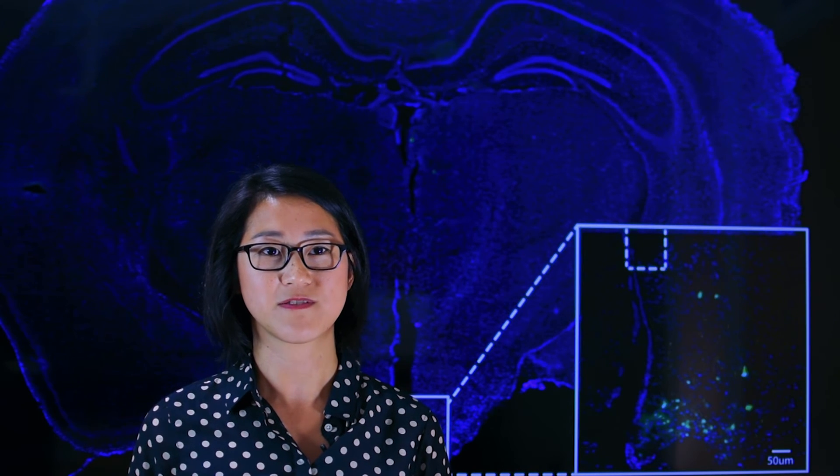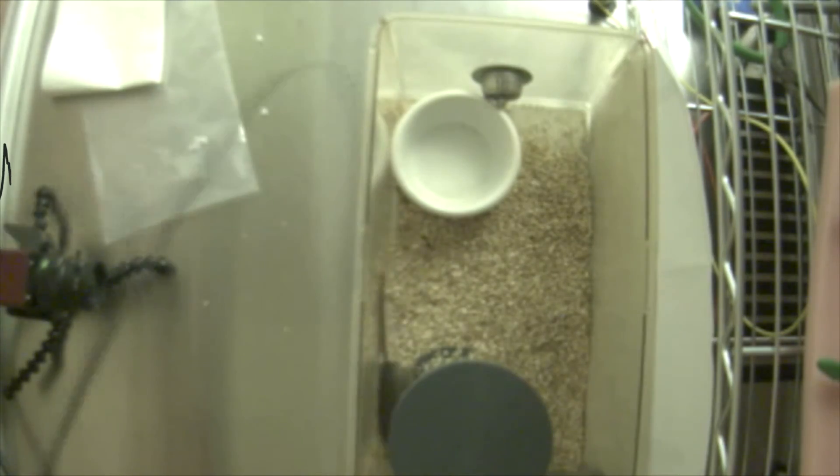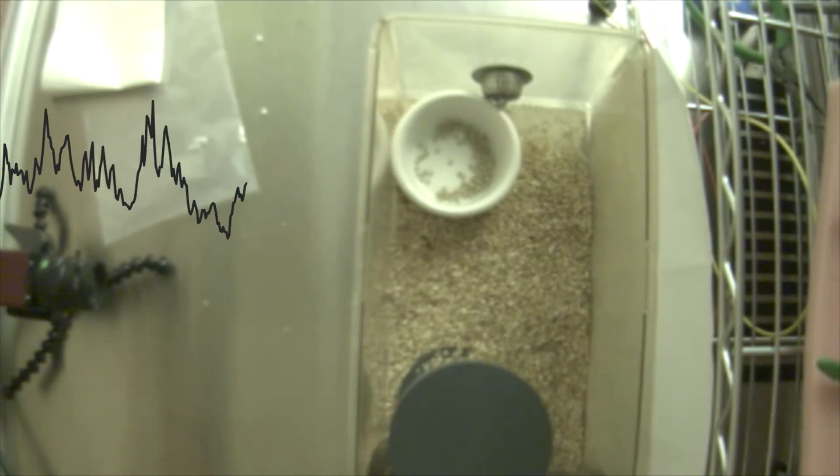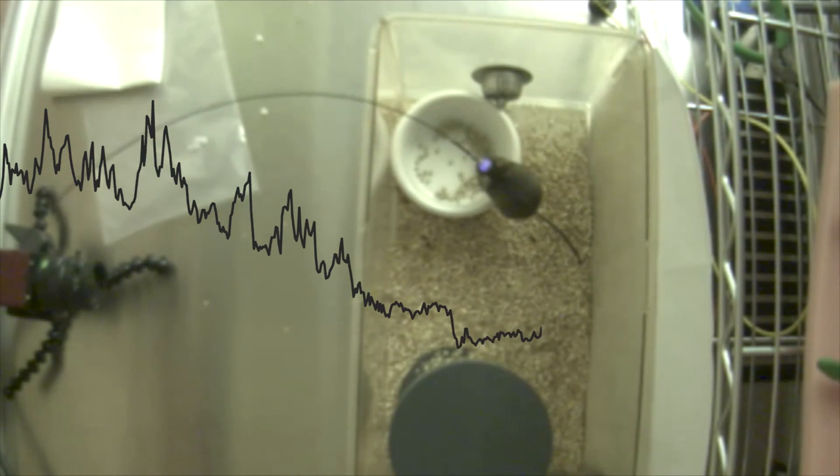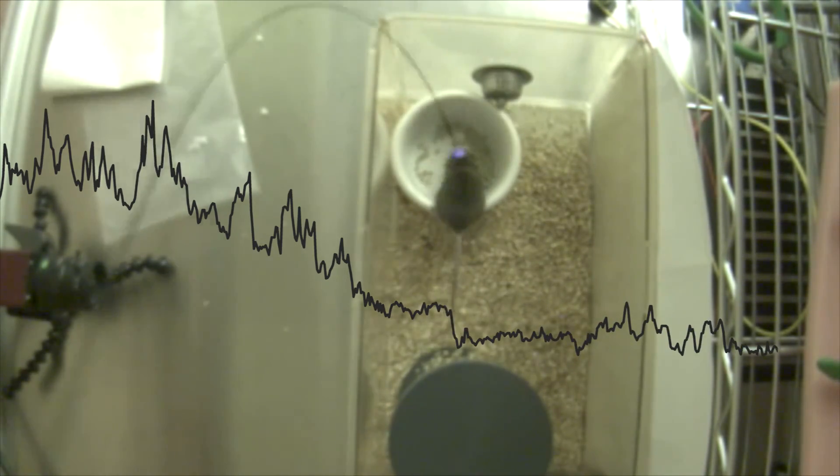The question we were interested in was, how does AGRP neural activity change in response to different environmental cues? In line with other studies, in hungry mice, AGRP activity rapidly drops in the presence of food. However, we found that AGRP neurons do not respond to water, predator scent, or non-salient, non-food objects.